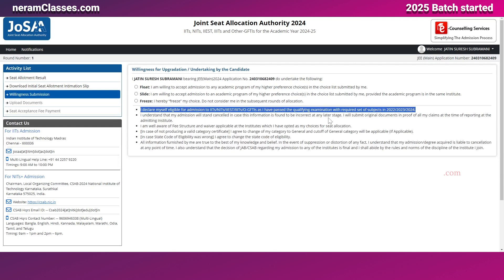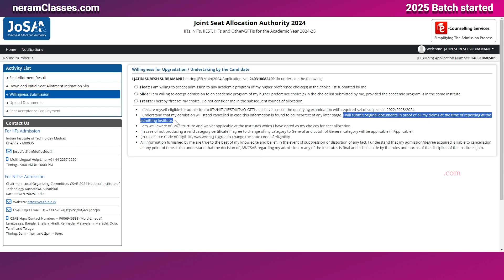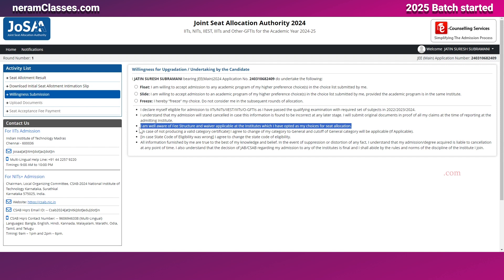It also states that your admission will be cancelled if any information provided in your application form or school marks is found to be incorrect at any stage. You are also declaring your willingness to submit document proof for all claims during admission, where all original documents provided during the application form need to be verified at the college. Another declaration states you are well aware of the fee structure and any waiver or scholarship available for the course at that institution.